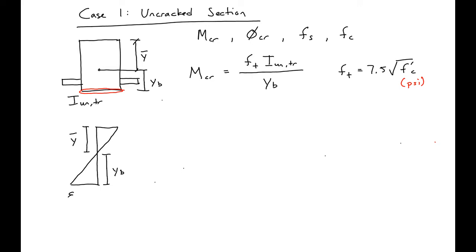We know that the bottom fiber is equal to the tensile capacity, or the tensile strain capacity of our concrete, which is equal to FT over EC.